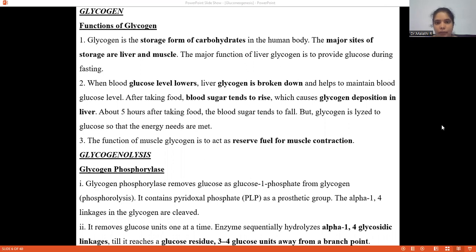The major function of liver glycogen is to provide glucose during fasting. When the blood glucose level lowers, liver glycogen is broken down and helps to maintain blood glucose level. After taking food, blood sugar tends to rise which causes glycogen deposition in the liver.